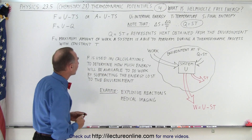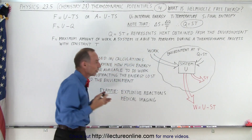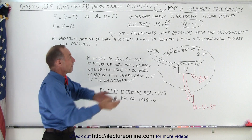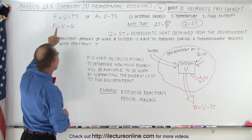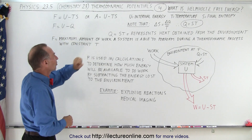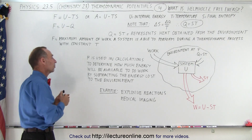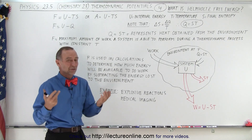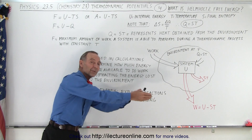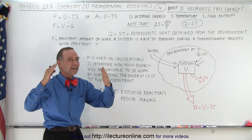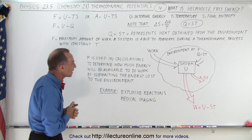Q here represents the heat obtained from the environment, and of course it also represents the heat returned back to the environment. Therefore, we can say that the Helmholtz free energy is the maximum amount of work a system is able to perform during a thermodynamic process at a constant temperature T — take the internal energy of the system, subtract what's going to be lost to the environment, and that's the maximum you can get out of that system.